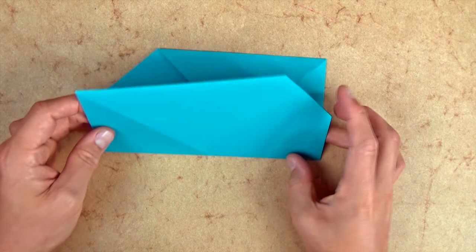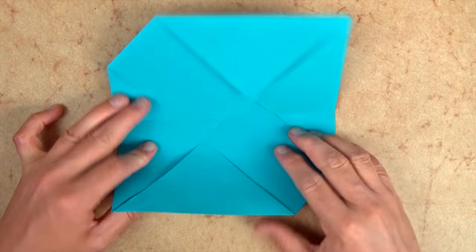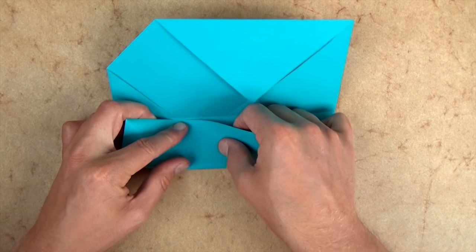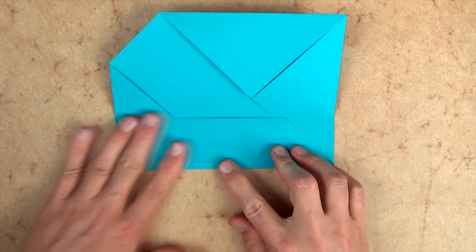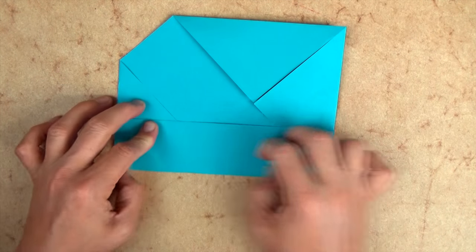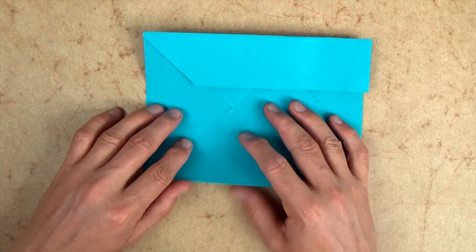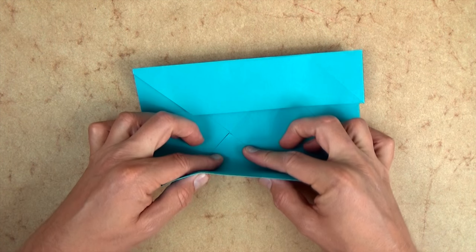And now unfold and let's fold the bottom edge to the crease. Try to keep this flap down. And let's rotate and let's do the same thing on this side. Let's fold this edge to here. And again, try to keep this flap down.